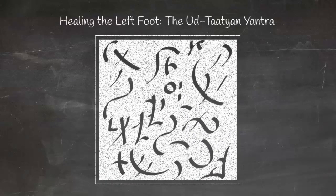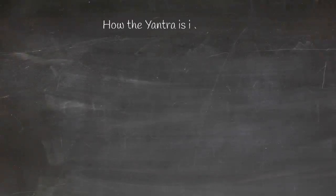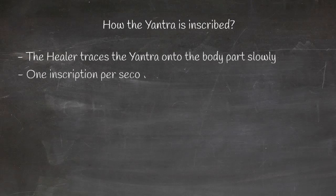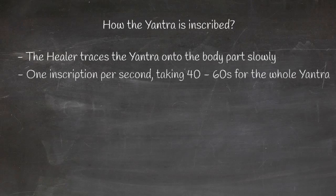The Uttatyan yantra is inscribed on the feet. The Ayyanist healer will then trace the yantra symbols on the body part slowly using their index finger. One symbolic inscription per second is usually an optimized traditional speed that has been passed down the generations, with the whole inscription completed in 40 to 60 seconds.